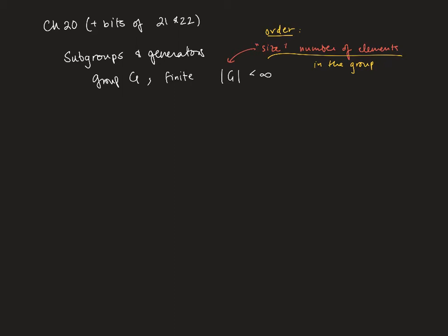Like S3 for instance, the permutations of three things, there are six elements in that group. So that's a group of order six. So the order of S3 is six and we write it using absolute value bars.